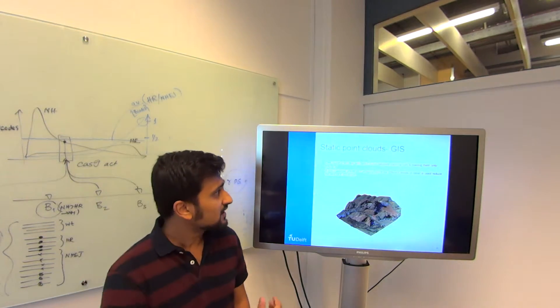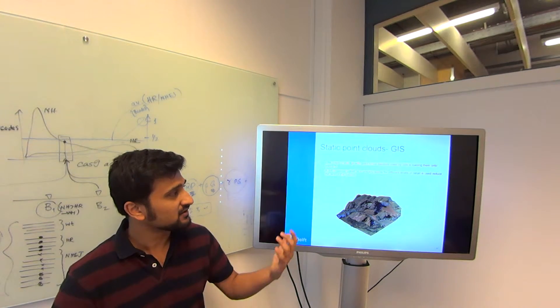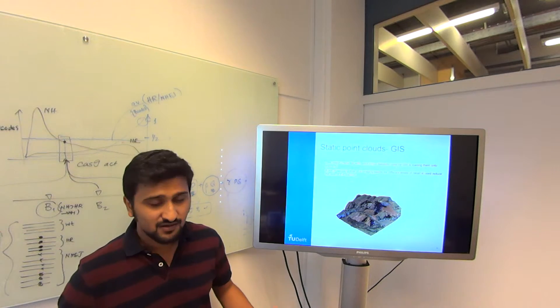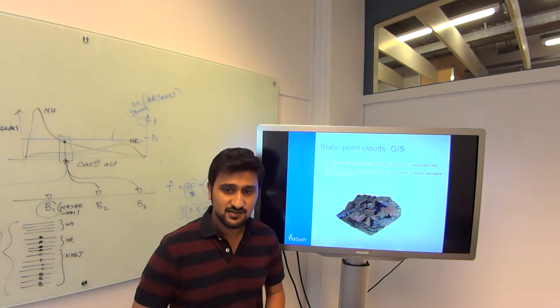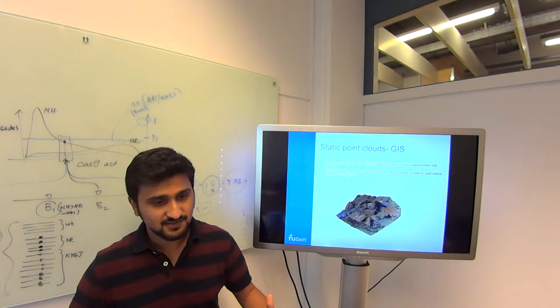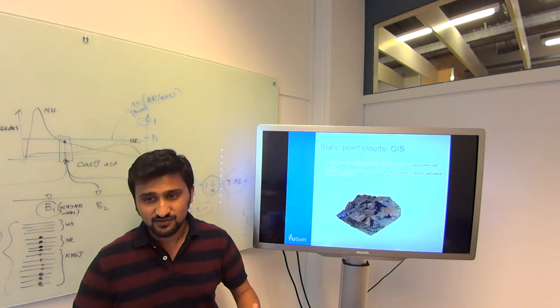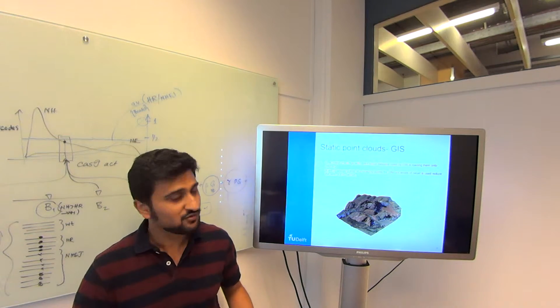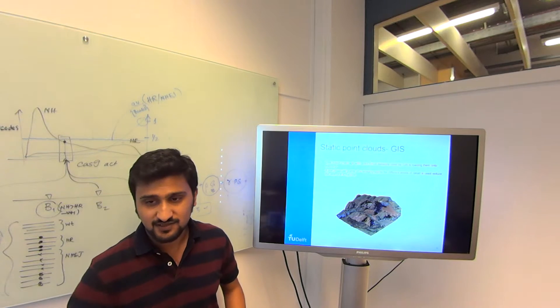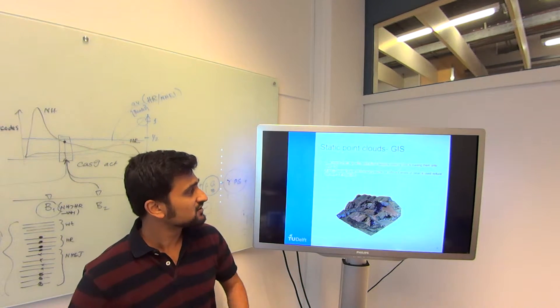I'll start with static point clouds first. An example application of static point clouds would be in geographic information systems. One of the challenges here is that the data sets are so huge because these are geographical areas that are captured by planes, drones and rotating scanning stations. To load them onto memory before you can do any rendering is a huge challenge. I gave you that example of that one data set that they collected.